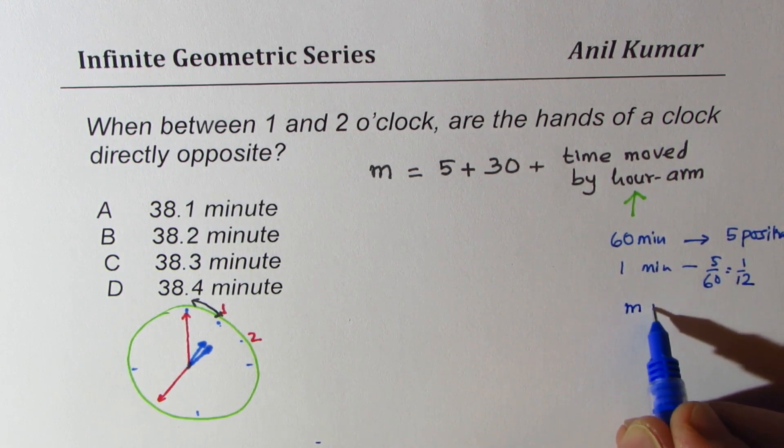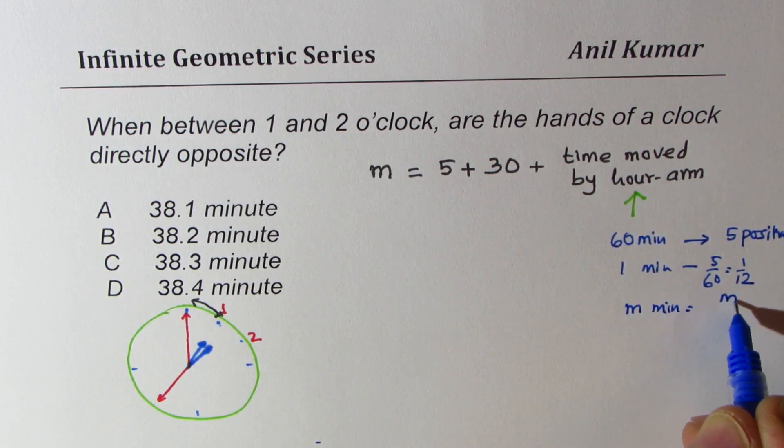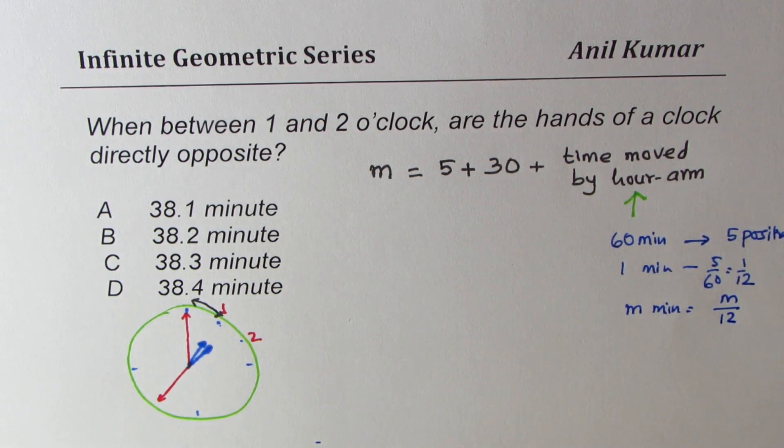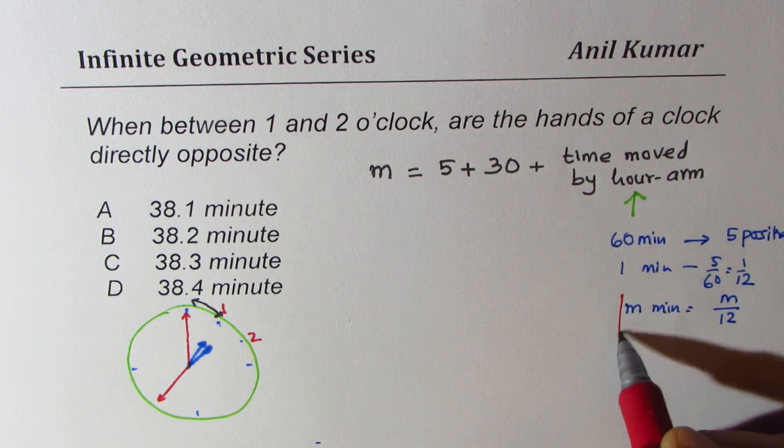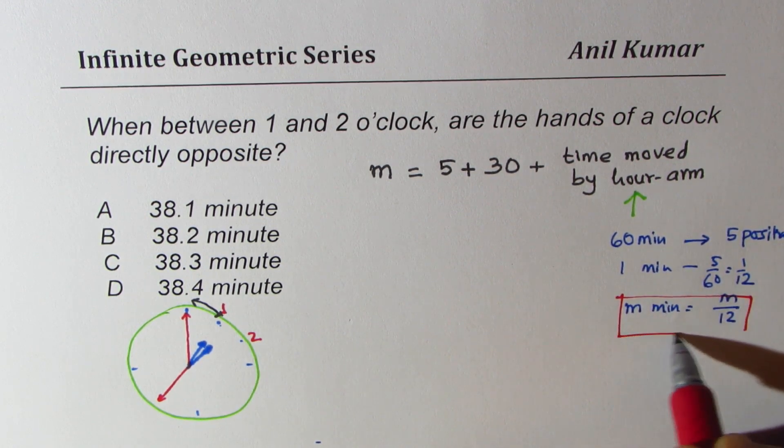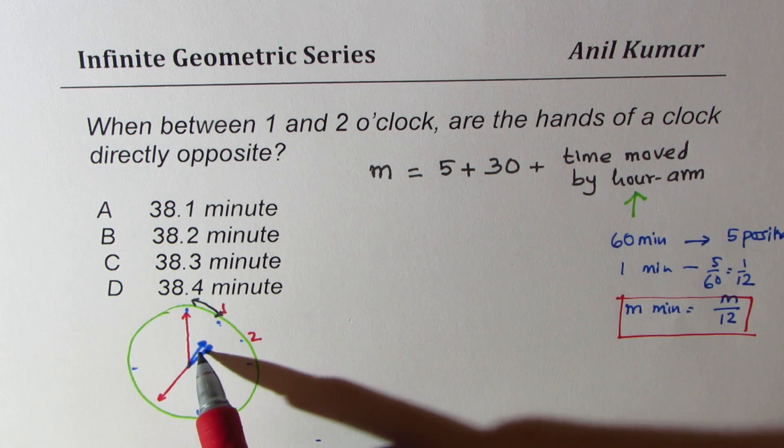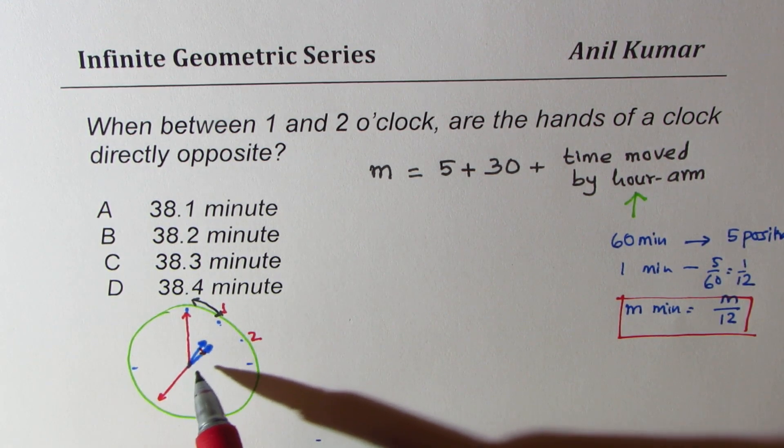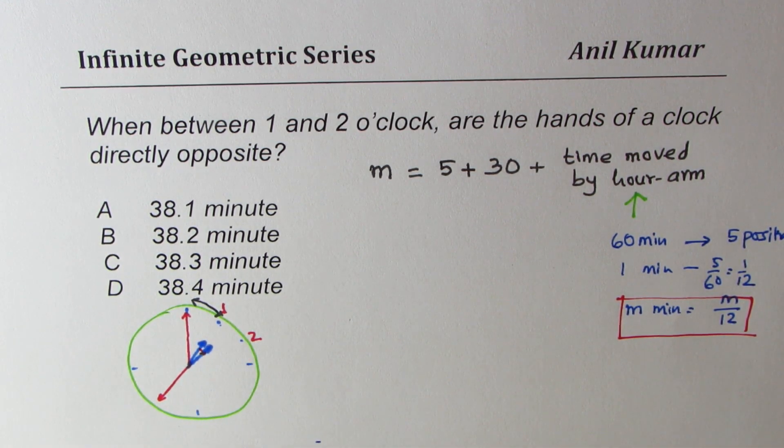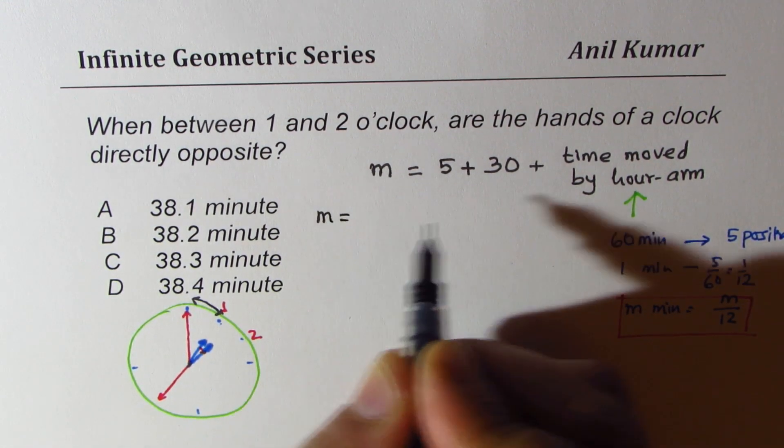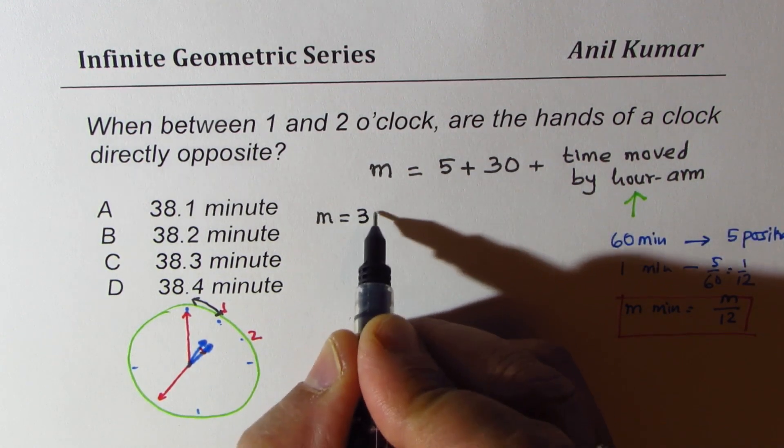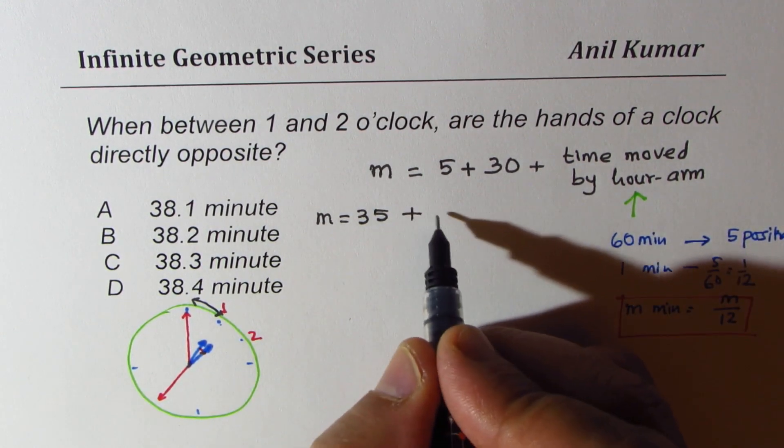So in m minutes, it will be m over 12. Does it make sense to you? So this time moved by the hour arm is m over 12. Now, we'll use this position, m over 12, for the duration which it moved. So that would be the extra. So we get our equation as m equals 35 plus m over 12.